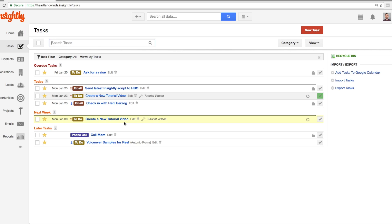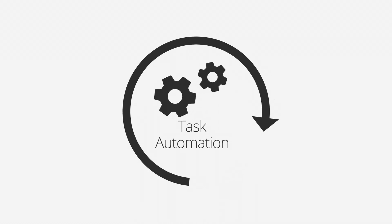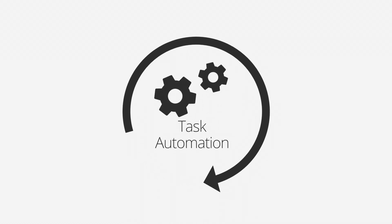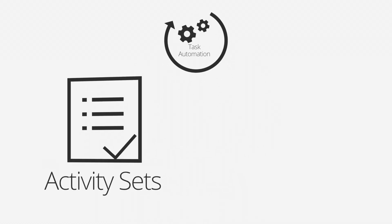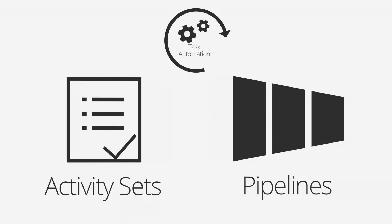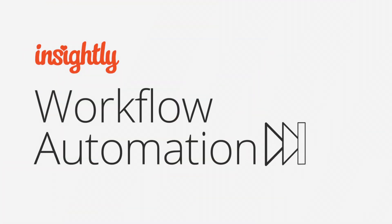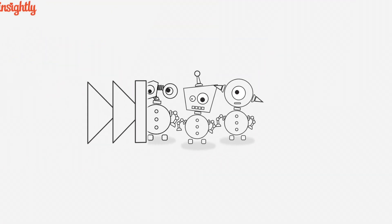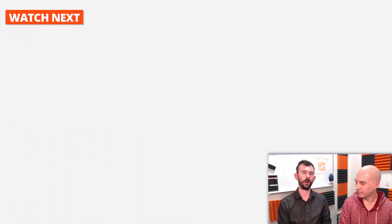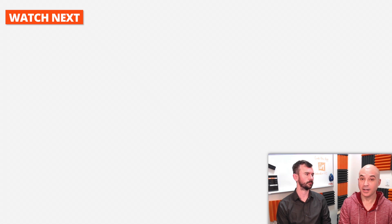Before the end of the video, we wanted to mention there are a couple of ways to automate tasks — that is, to trigger sets of tasks automatically depending on certain conditions being met. They are activity sets and pipelines, along with workflow automation. Check out the videos at the end of this video if you'd like to learn more about automating your tasks — it'll save you lots of data entry time. Go and create some tasks, have fun.